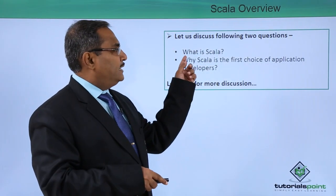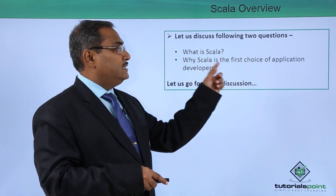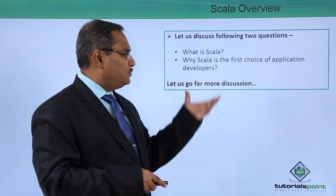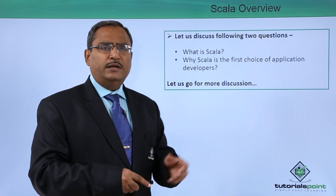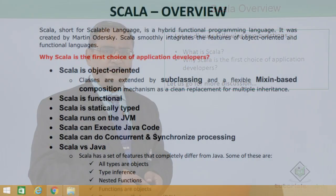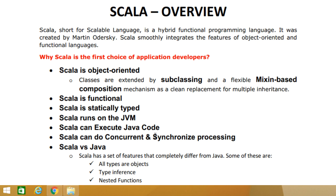What is Scala? Scala, short for Scalable Language, is a hybrid functional programming language created by Martin Odersky. Scala smoothly integrates the features of object-oriented and functional languages. It is compiled to run on the Java Virtual Machine. Many companies depending on Java for critical applications are turning to Scala to boost development productivity, scalability, and overall reliability.